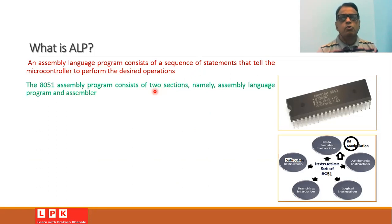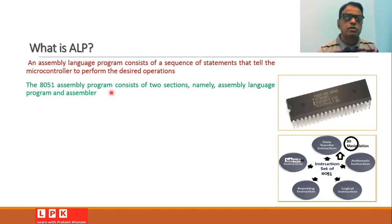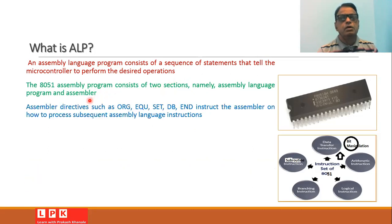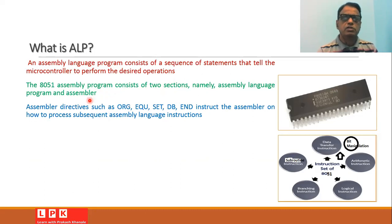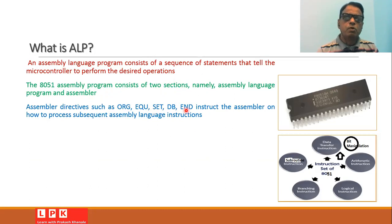An 8051 assembly language program consists of two sections. The first section is the assembly language program itself, and the other section is called the assembler. The assembler consists of different directives, such as ORG, EQU, SET, DB, and END — these are the most popular directives used in assembly language programs for the 8051 microcontroller unit.